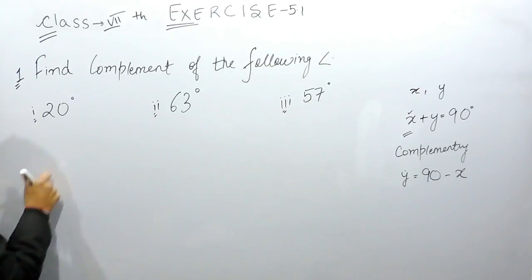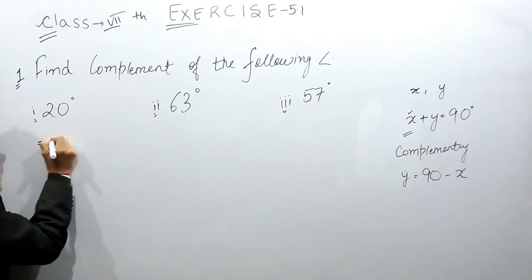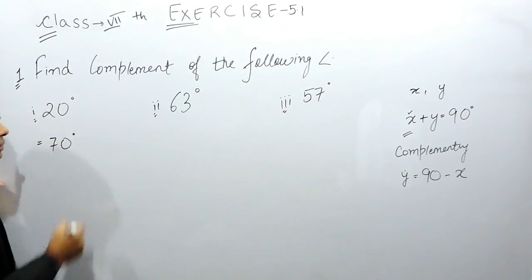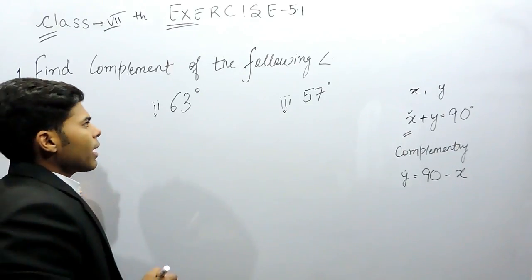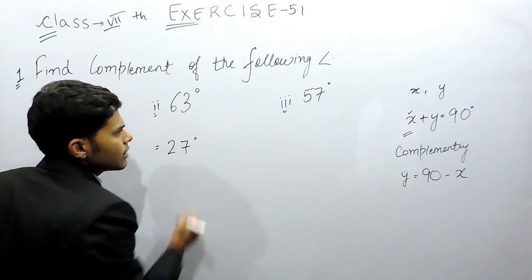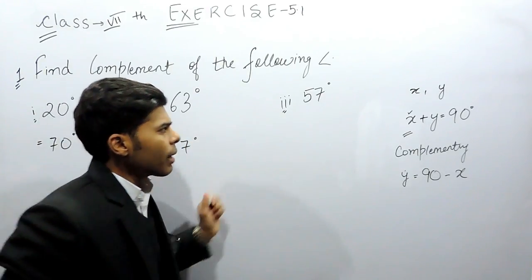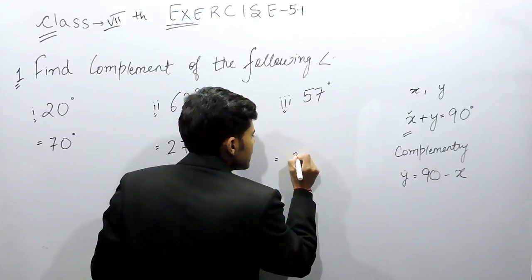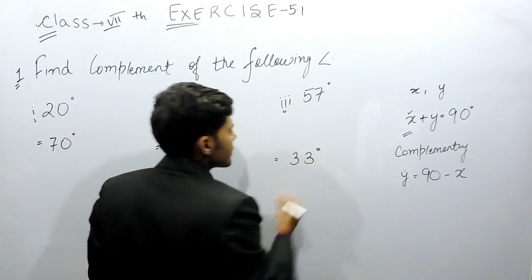So the second angle will be equal to 90 minus 20 degrees, that is 70 degrees. Here it will be 90 minus 63, that is 27 degrees. And here again, 90 minus 57, that will be 33 degrees.